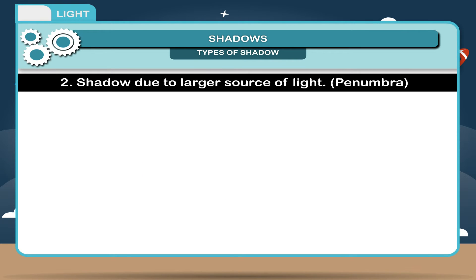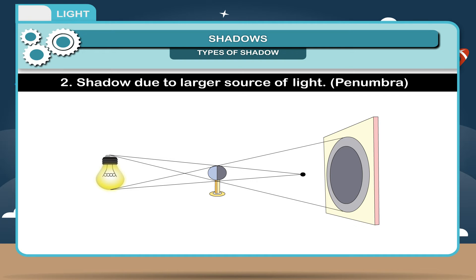2. Shadow due to larger source of light. Penumbra: If the source of light is big, such as a candle or a bulb, there will be two shadows. A dark shadow called Umbra in the center and a faint shadow called Penumbra on the outside.